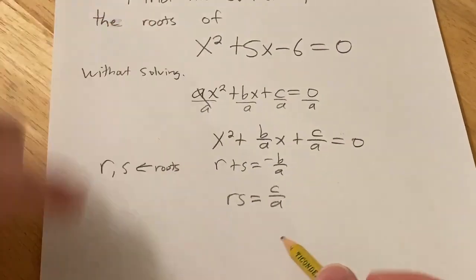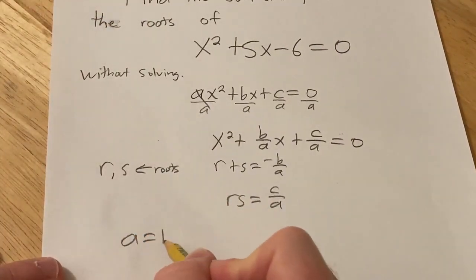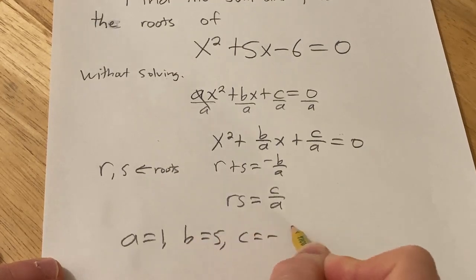So in this example here, a is 1, b is 5, and c is negative 6.